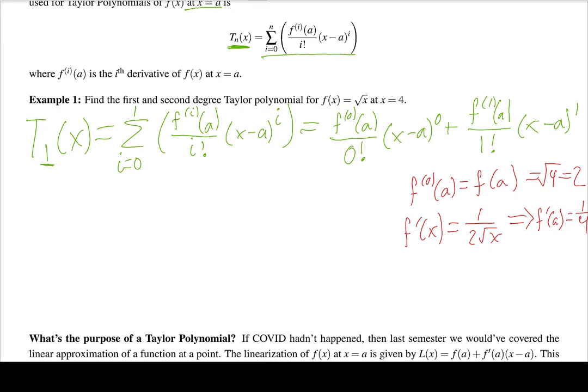Plugging in: T₁(x) = 2/0! · (x−a)^0 + (1/4)/1! · (x−a)^1. Since 0! = 1 and anything to the 0 is 1, the first term is just 2. The second term is (1/4) · (x−4), so T₁(x) = 2 + (1/4)(x − 4).